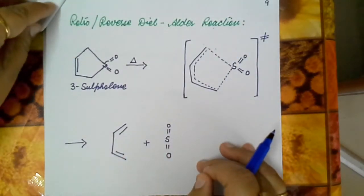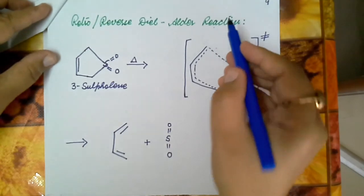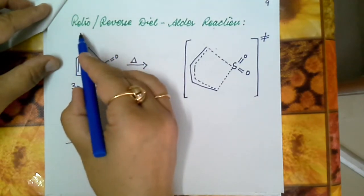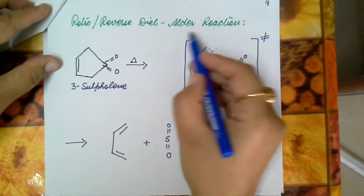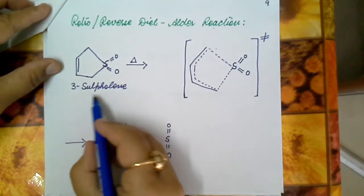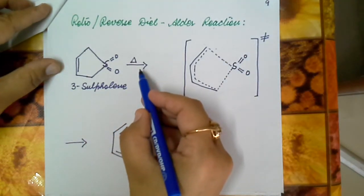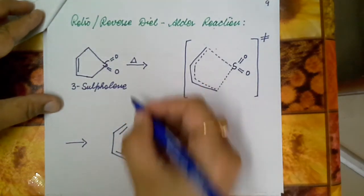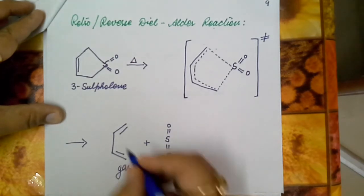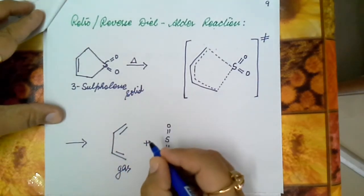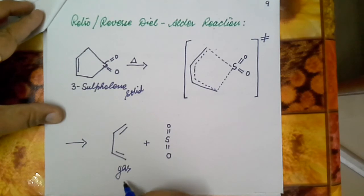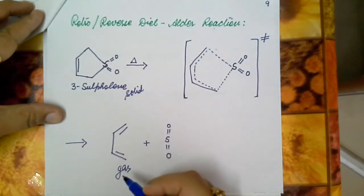Last but not least, the retro or reverse Diels-Alder reaction — the reversal of the Diels-Alder reaction is also possible and is known as the reverse or retro Diels-Alder reaction. For example, when 3-sulfolene is heated under suitable conditions, there is regeneration of butadiene. Since butadiene is gaseous and 3-sulfolene is solid, the solid form is easier to handle, making this a useful way to protect and generate butadiene in situ.